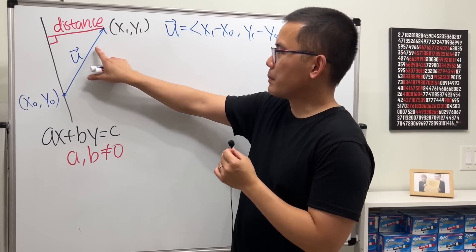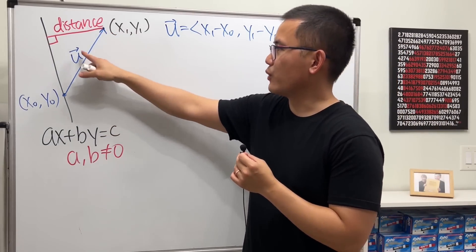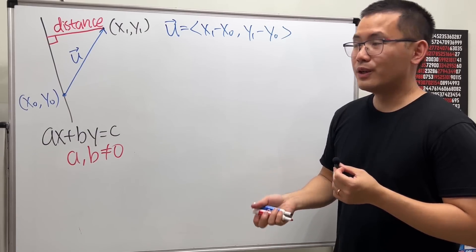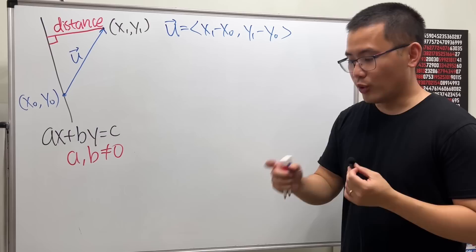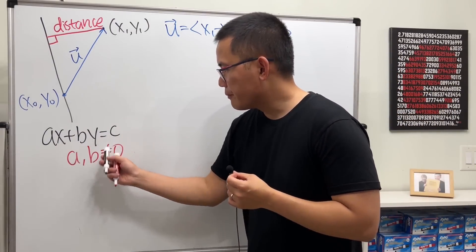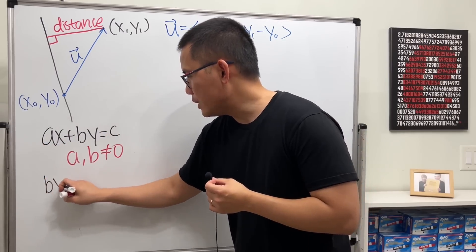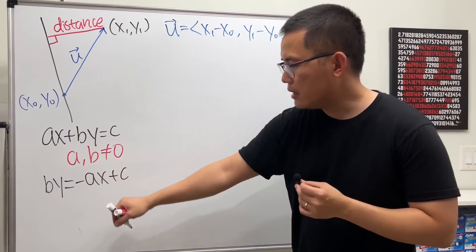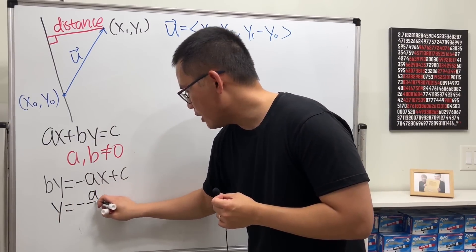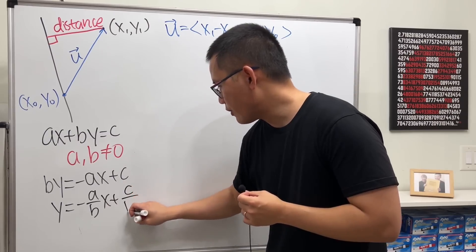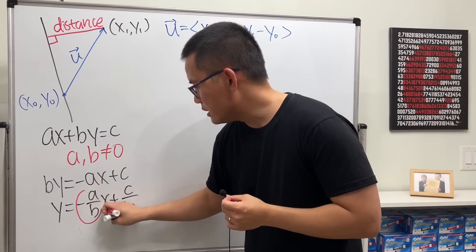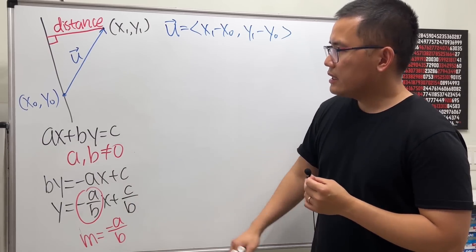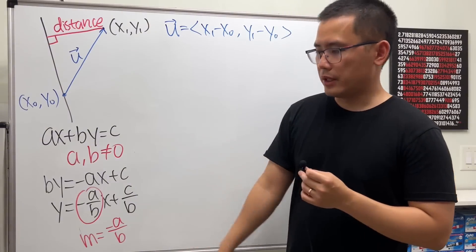This vector u is not perpendicular to the line, and its length is longer than the distance we want. The key is to find the perpendicular direction. Looking at the line equation, we can rewrite it as y = (−a/b)x + c/b, so the slope of the line is −a/b.